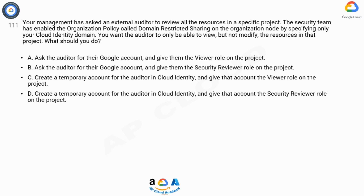What should you do? A: Ask the auditor for their Google account and give them the Viewer role on the project. B: Ask the auditor for their Google account and give them the Security Reviewer role on the project. C: Create a temporary account for the auditor in Cloud Identity and give that account the Viewer role on the project. D: Create a temporary account for the auditor in Cloud Identity and give that account the Security Reviewer role on the project.